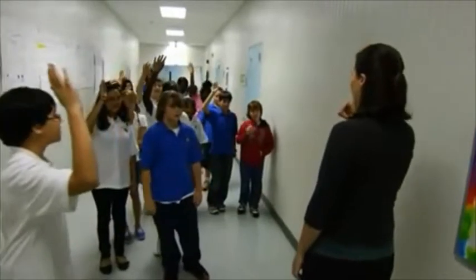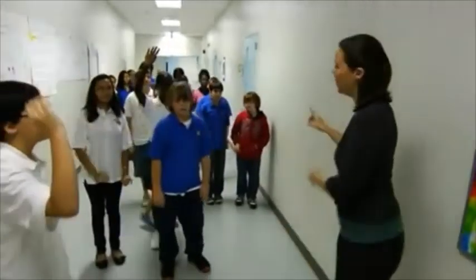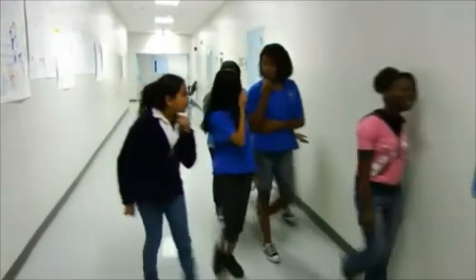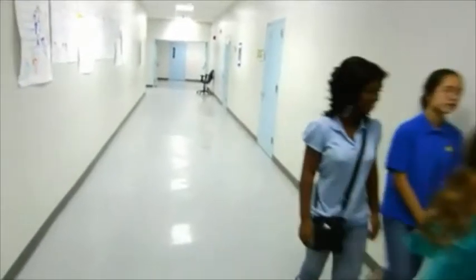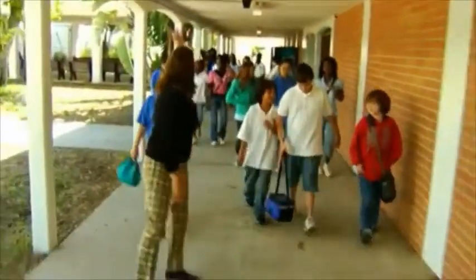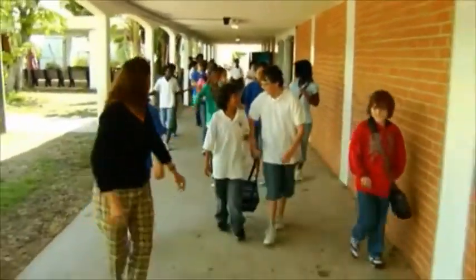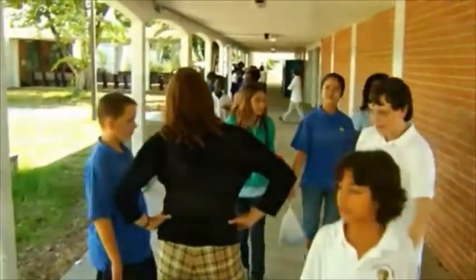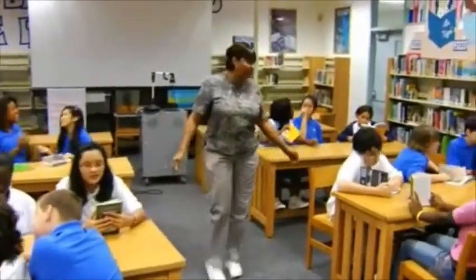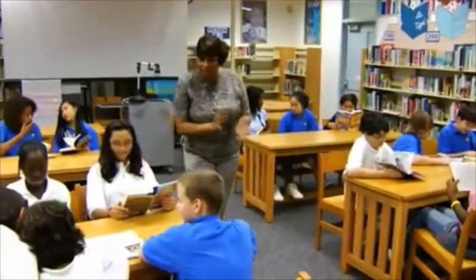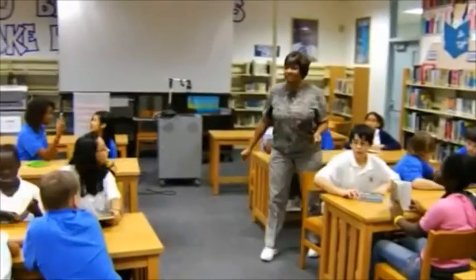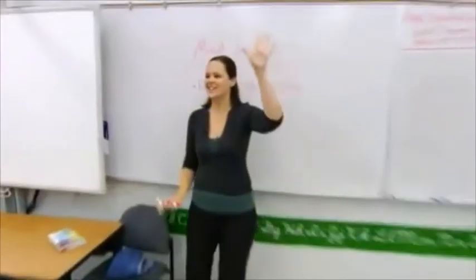Another reason this signal is effective is that it can be used anywhere inside the classroom and out, and combines both visual and audio elements. Other signals are not as effective because they lack one or all of these features. For example, flicking the lights only works indoors and is not a signal that you can carry elsewhere. Although clapping your hands provides both visual and auditory cues, it requires repetition, and it may be a while before you have all of the students' attention.